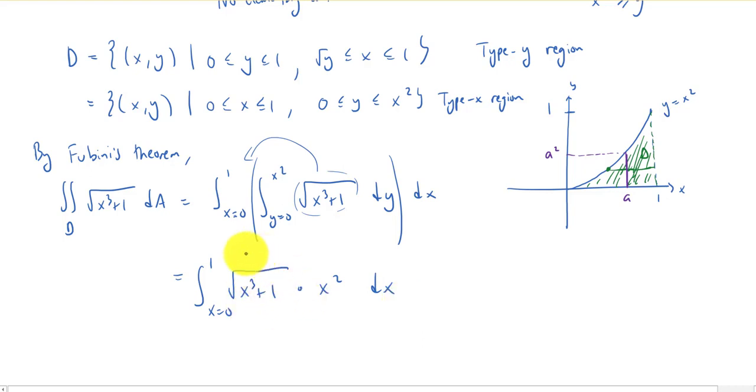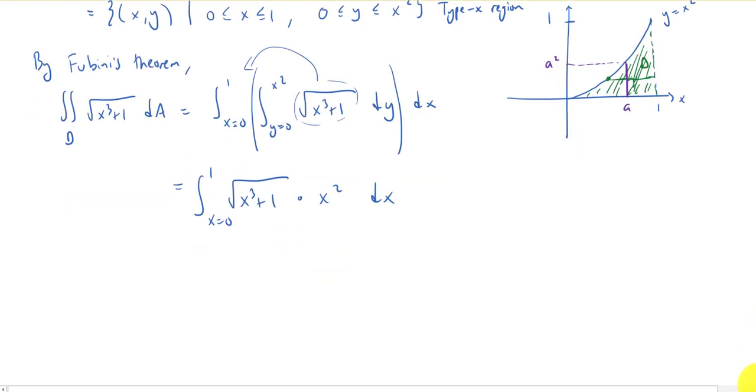And this makes a huge difference, because whereas before all I had was the root x cubed plus 1, now I have an additional product, right, an additional factor here, times an x squared, which is going to let me do a substitution. So I'm going to make the substitution u equals x cubed plus 1, so that du is 3x squared dx.